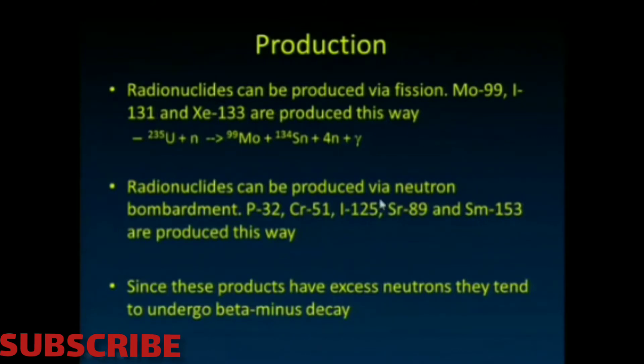These nuclides all have excess neutrons and therefore tend to undergo beta minus decay.